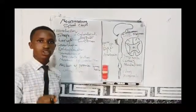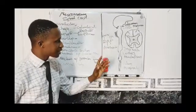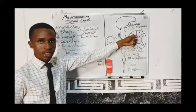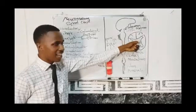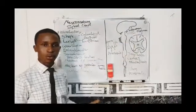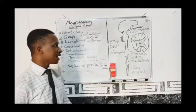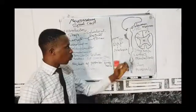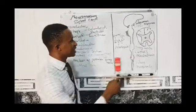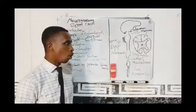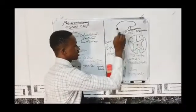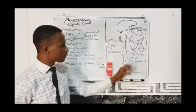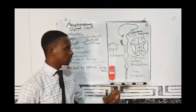An important point: the grey matter of the spinal cord is on the inside, and the white matter is on the outside. For the brain it is the opposite — white matter is inside and grey matter is outside. The grey matter of the spinal cord has a butterfly shape, or an H-shape. At the centre of the grey matter you will see what is referred to as the central canal, or the spinal canal.